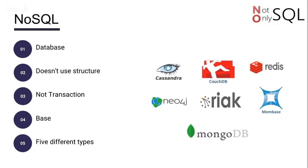NoSQL is a different kind of persistence technology. Yes, it's a database — you can put information there, you can retrieve information, update and delete information. But they don't use the relational structure and they usually don't have transactions. We have here five different types of NoSQL database.